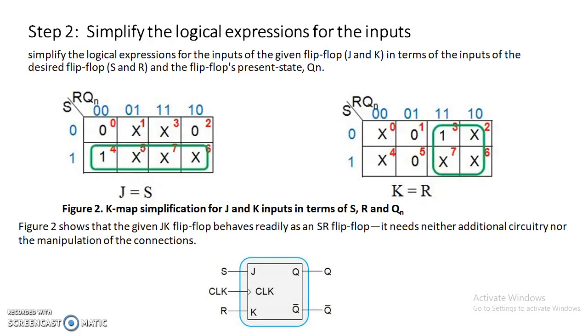Next step: let us simplify the logical expressions for the inputs. Simplify by drawing a three-variable K-map SR Qn, and then we are going to get the equation in terms of J equal to S and K equal to R.